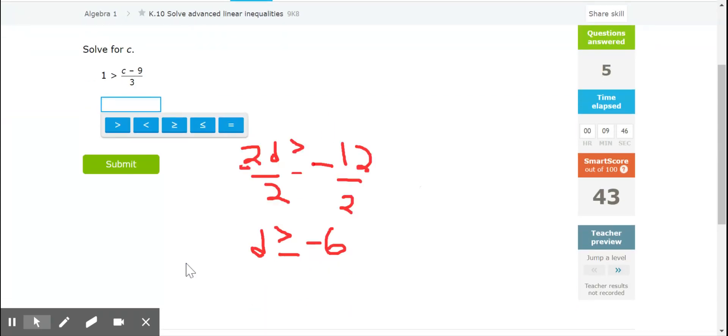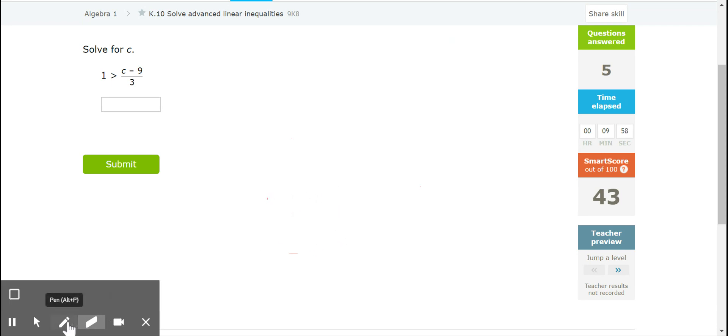We'll do one more, but I think you have the idea by now. So, this is really technically in parentheses. So, 1 is greater than C minus 9 to 3.